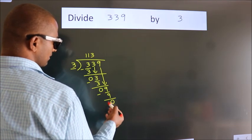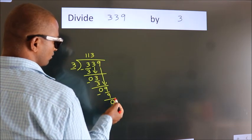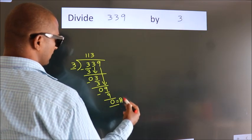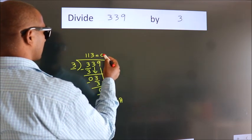After this, no more numbers to bring down. So we stop here. This is our remainder. This is our quotient.